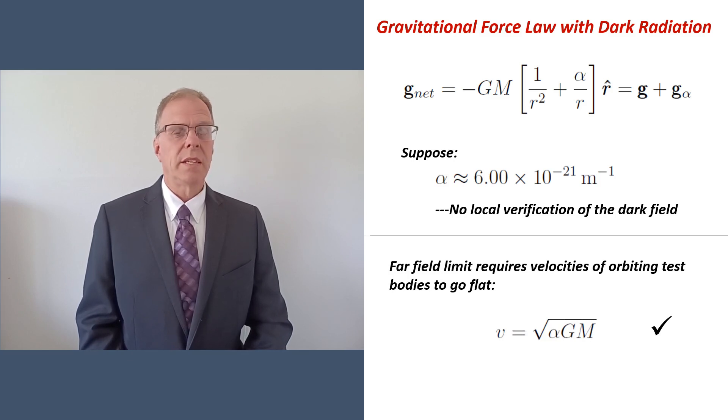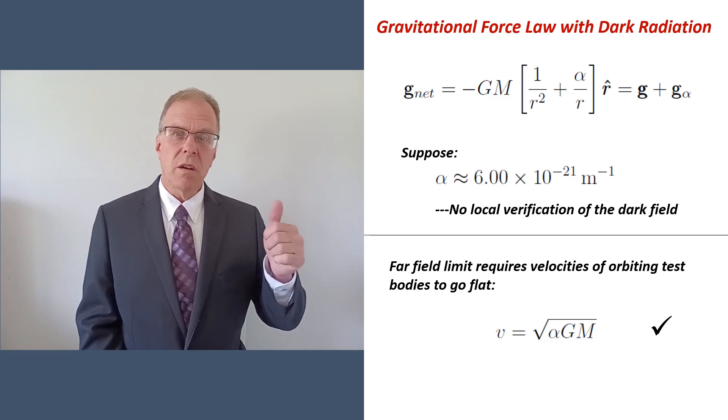Now we can extend our theory to the galactic scale with billions of stars, adjust the value of alpha, and arrive at a galaxy with a dark matter halo.